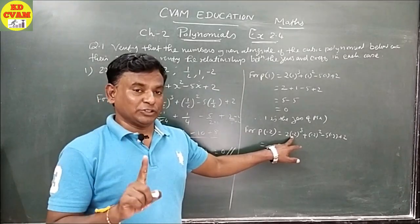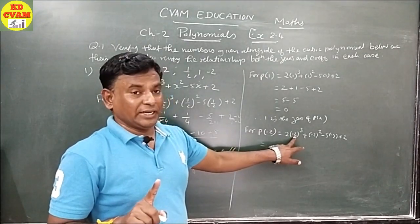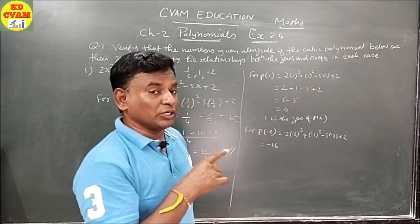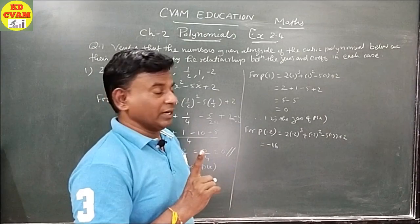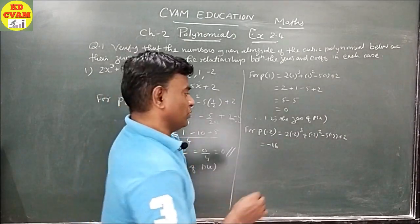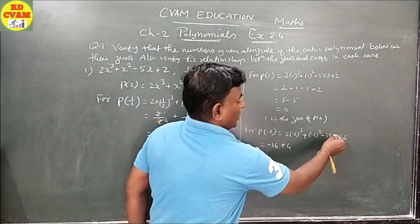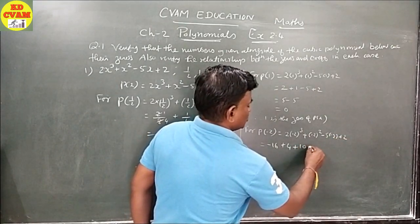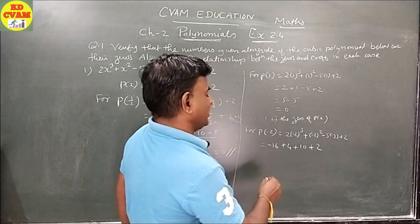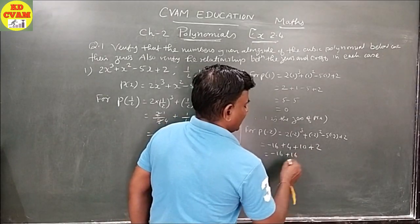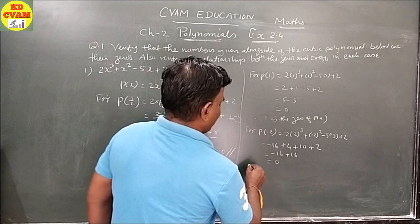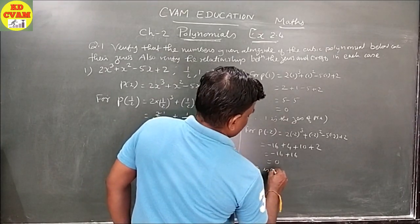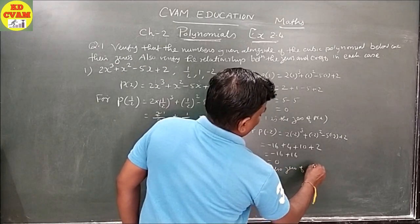For P(-2): 2(-2)³ + (-2)² - 5(-2) + 2. This gives 2 into -8 + 4 + 10 + 2, that is -16 + 16 = 0. Therefore -2 is also a zero of P(X).